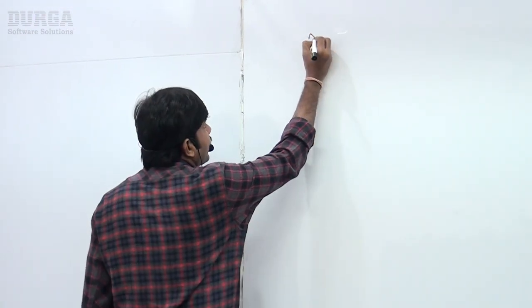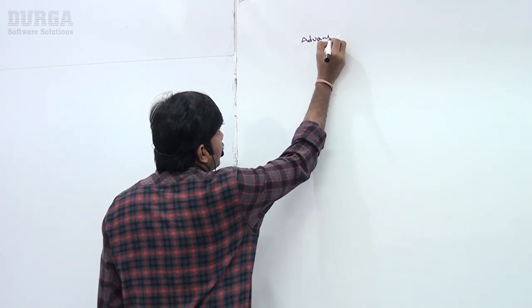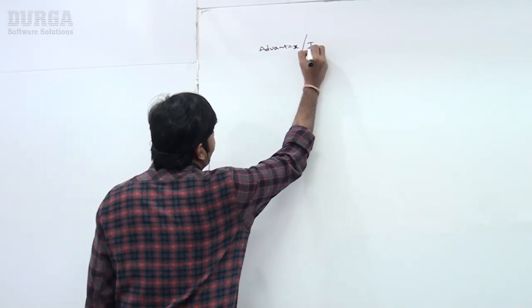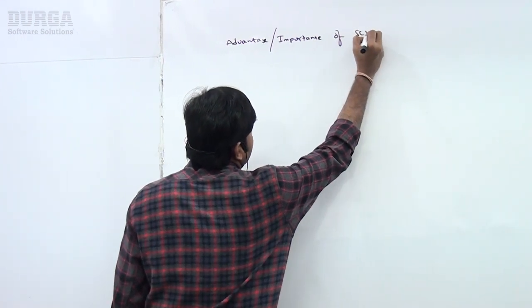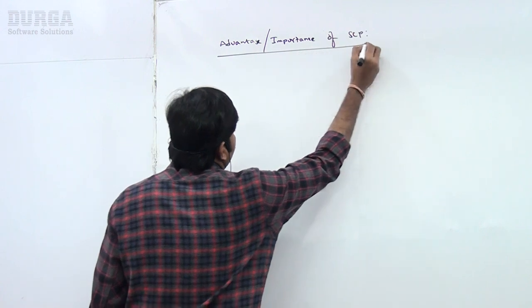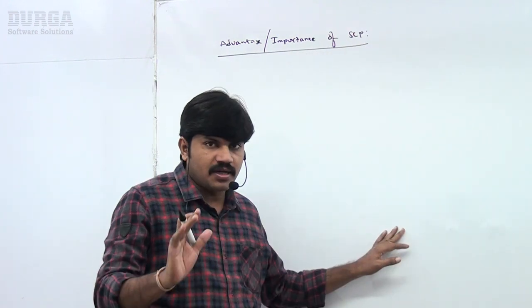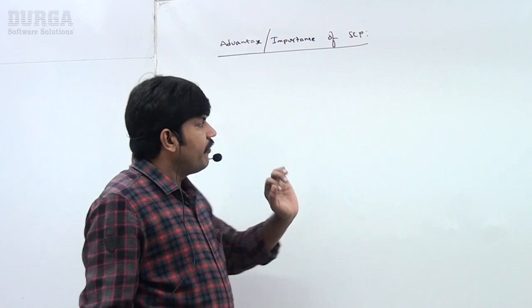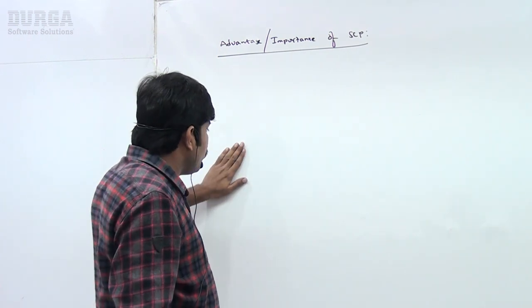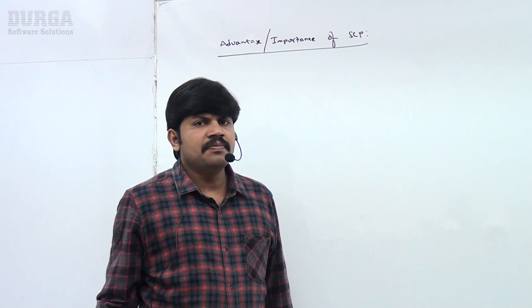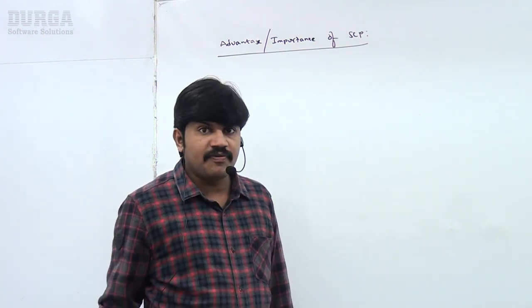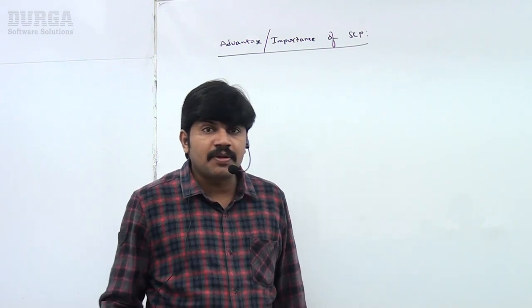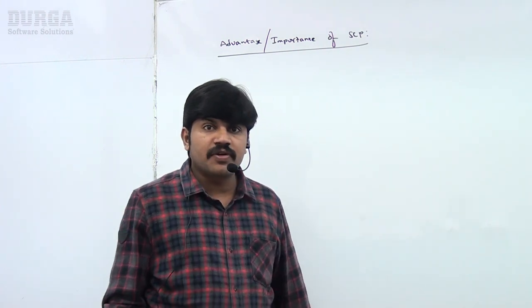This part we have to discuss. What is the advantage or importance of SCP — the String Constant Pool? Also, just do you know why the SCP concept is applicable only for String but not for StringBuffer? Why is the immutability concept applicable only for String but not for StringBuffer? Such types of questions you can answer very easily if you are aware of this concept.